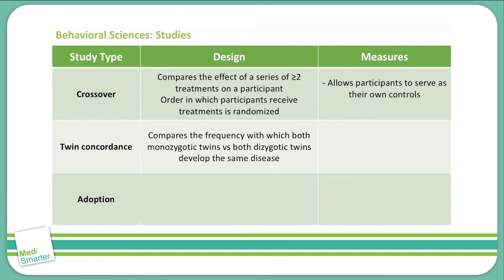The twin concordance study compares the frequency with which a disease develops among monozygotic twins versus dizygotic twins. This measures the various effects of nurture versus nature, as well as heritability and the influence of environmental factors.